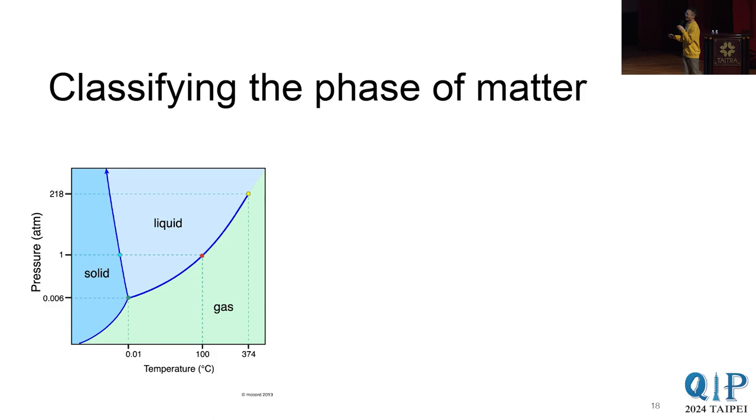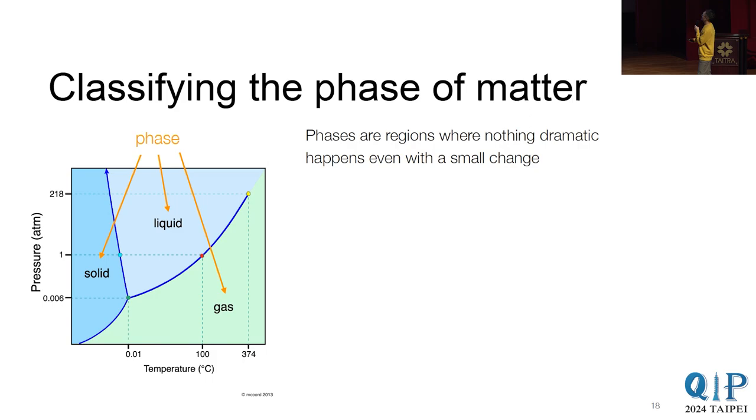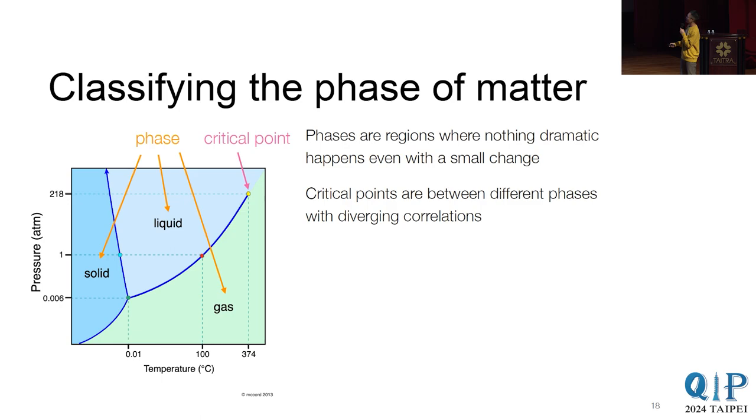So let's begin. So we'll actually talk about this classification of phase of matter. So here we have this phase diagram for water. So there are these liquid phase, solid phase, and gas phase. And these phases, these are regions where nothing dramatic happens. So yeah. So say you have water, and then you just change the temperature of it, it's still water. Nothing much change. On the other hand, if you are near these phase boundaries, after a small change, the feature could just be very different. And these are called critical points.